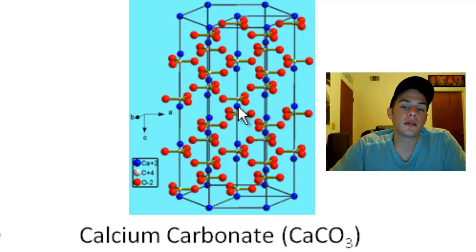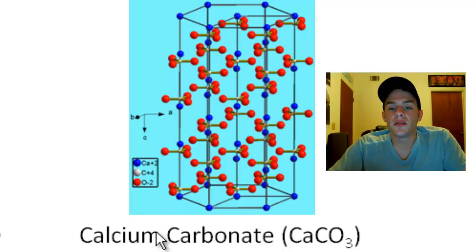So these blue things, these are the calcium ions, the Ca2+ ions. And then these molecule-looking things right here, these are called carbonate anions. They consist of a carbon atom in the middle, and that carbon atom is bonded to three oxygen atoms. And the whole ion all together carries a negative 2 charge, which neutralizes the positive 2 charge of the calcium ions.